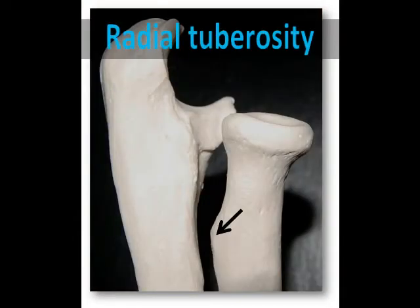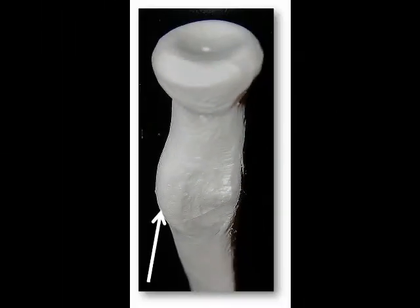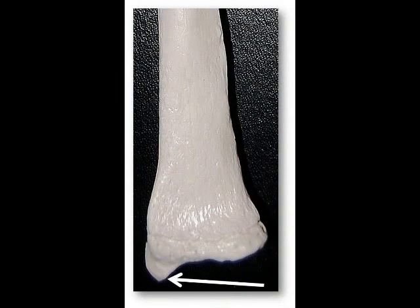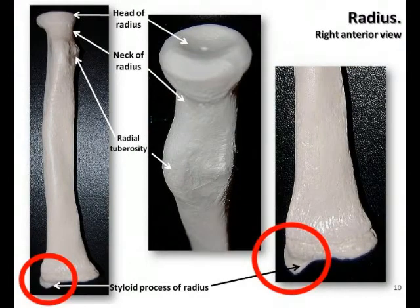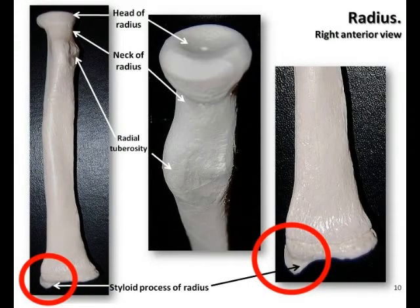Just inferior to the neck is the radial tuberosity, a rough patch of bone that also serves as an attachment point for the tendons of the biceps brachii muscle. The radius widens at its distal end to form the tooth-like styloid process on the lateral side, which you can actually feel just proximal to the thumb. The styloid process is an attachment point for the brachioradialis muscle as well as the radial collateral ligament to the wrist.